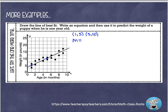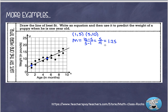Now I'll find the slope: m equals (10 minus 5) over (5 minus 1), which is 5 over 4. I can leave it as a fraction or convert to a decimal — 5/4 equals 1.25. Because this is a real-world problem about age and weight, I think 1.25 as a decimal is appropriate. So our slope is 1.25.